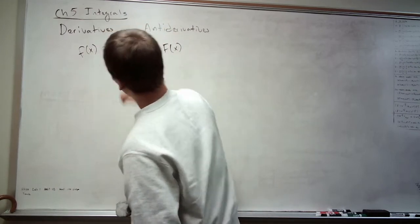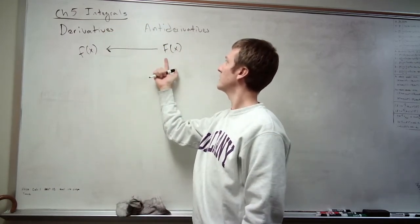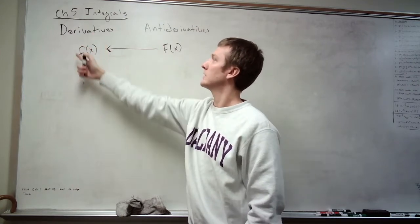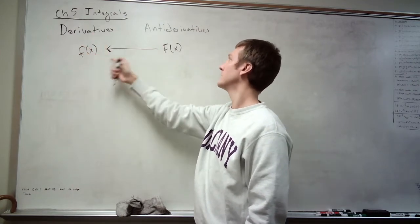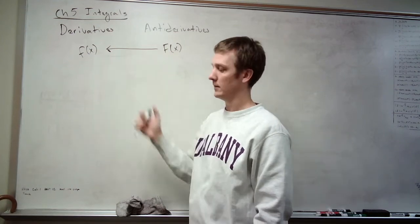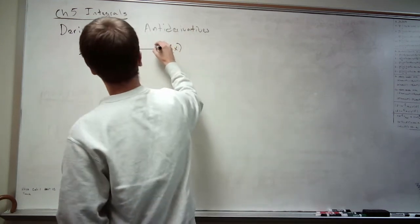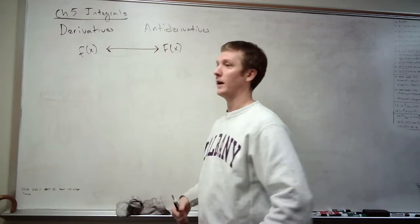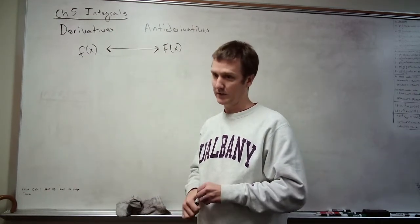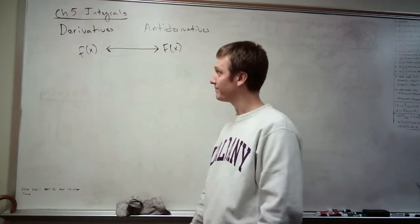So if you go from right to left here on this board, you start with this capital F function, you take its derivative, you get this guy. And what that means is, this is an antiderivative of that. The process of going in reverse is finding the antiderivative, and this is going to be essentially computing some integral at a later point in time.